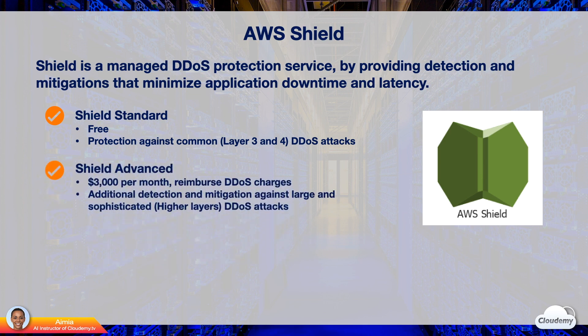For higher levels of protection against attacks, you can use AWS Shield Advanced to provide additional detection and mitigation against large and sophisticated DDoS attacks. You need to pay $3,000 per month for Shield Advanced — it is a little bit expensive. However, in the event of a DDoS attack, you will be reimbursed for any additional charges caused by the attack.